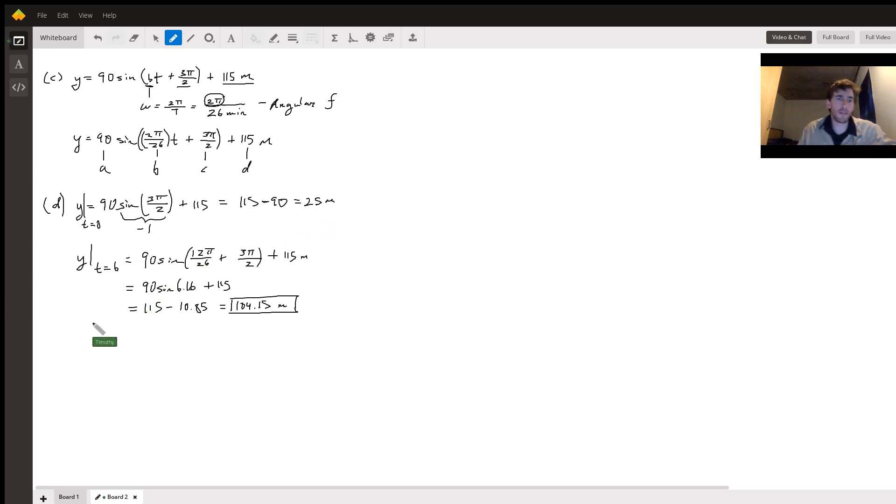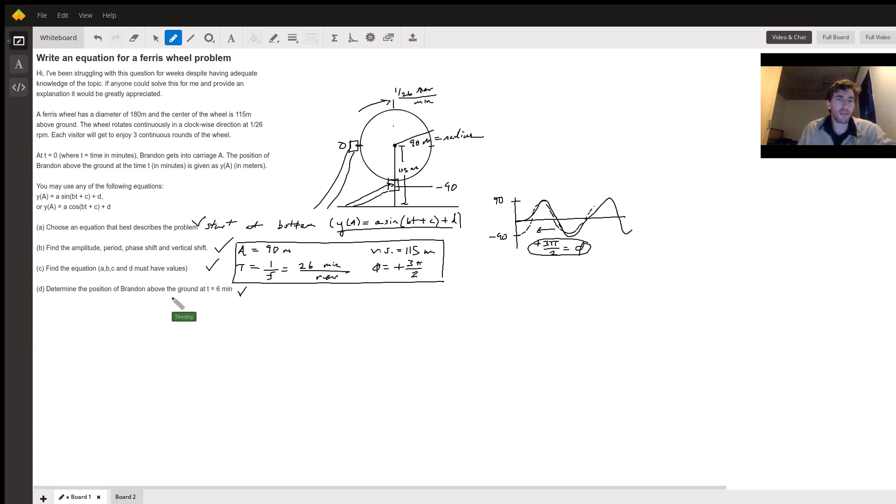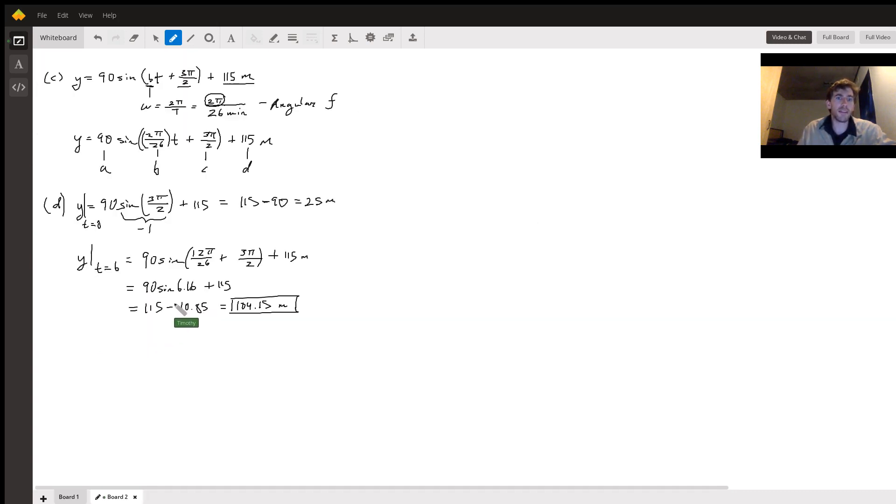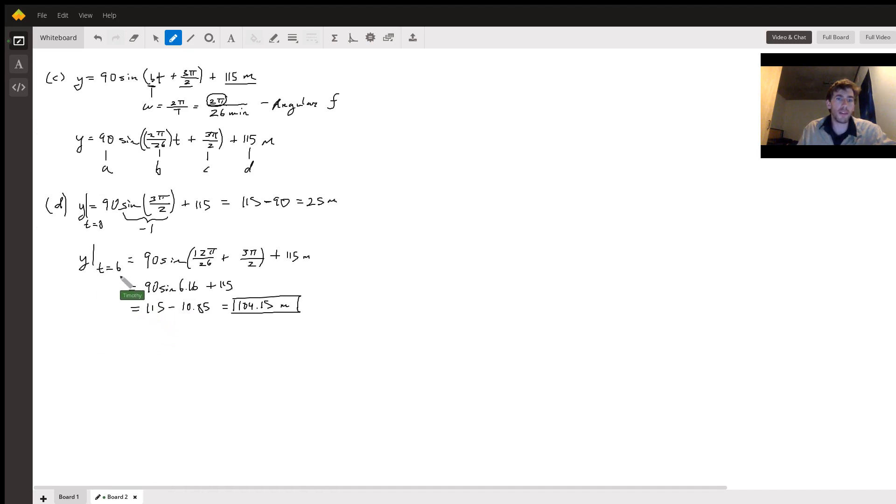Now the question part D asks, what is his position above the ground at t equals 6? And his position above the ground will be y at t equals 6 is 90 sine, 12 pi over 26, because we multiplied 2 pi times 6 up here, plus 3 pi over 2 plus 115. And I just put the 115 up front to make it 115 minus 10.85. And he should be 104.15 above the ground.